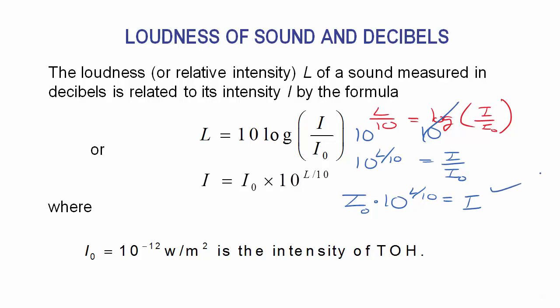You don't need to memorize both forms — just know you can always derive one from the other. The constant i₀ is called the threshold of hearing: it is the smallest sound level the human ear can detect.